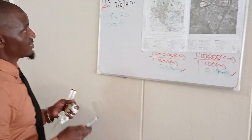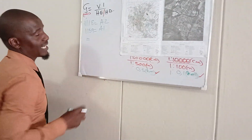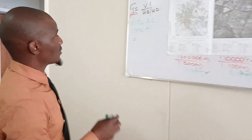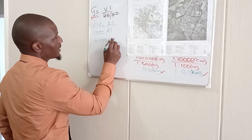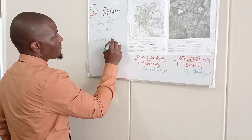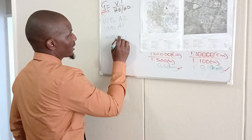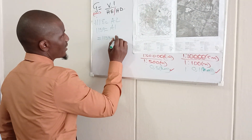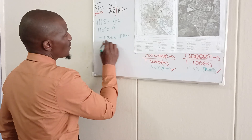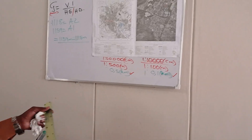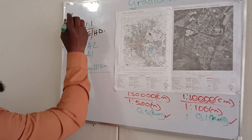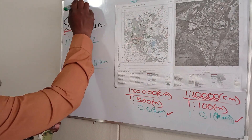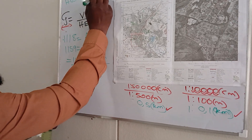I'll go back to my formula. The formula says the vertical interval — I'm going to consider the difference in height between my spot heights. Which one is the largest? 1,159 minus 1,118. Remember, all these are in meters. So my vertical interval is 1,159 minus 1,118 meters, over my horizontal equivalent.